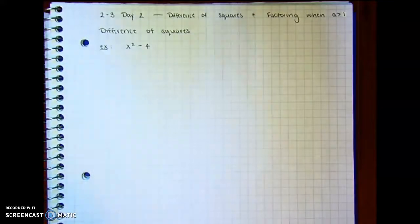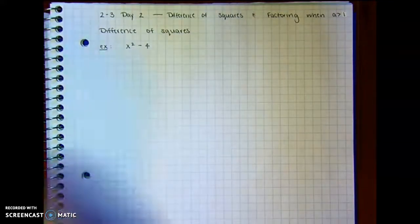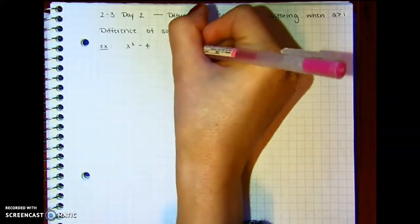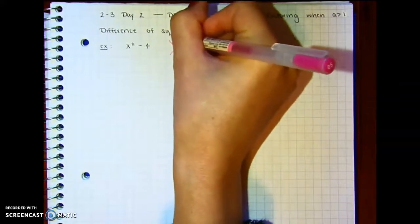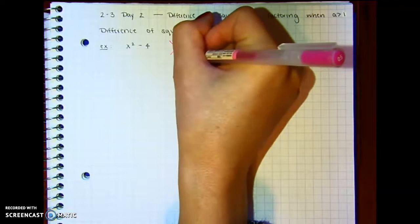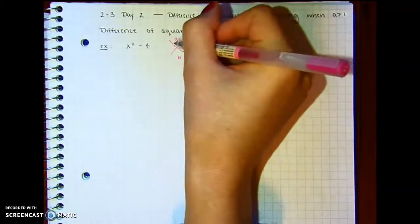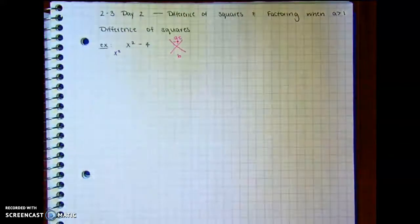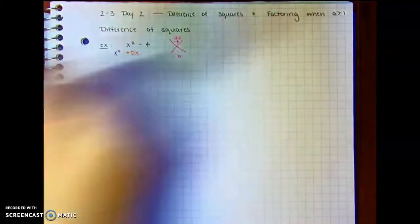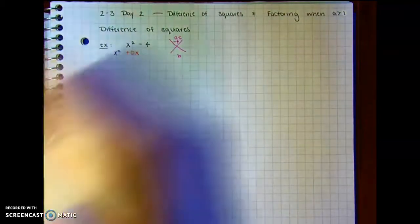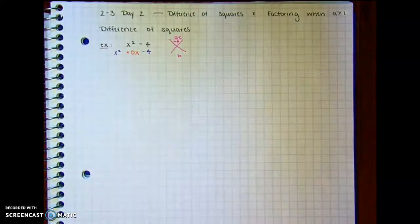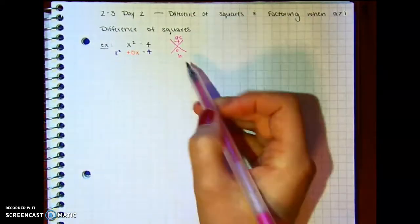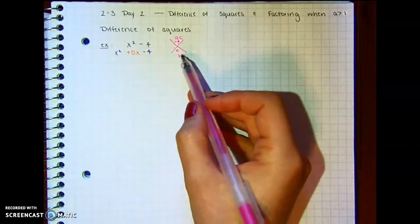So the idea comes from still keeping the idea that one multiplies to a times c and adds to equal b. So a times c is negative 4, but what's our b value? You can think of this as x squared plus 0x, right? So our b value is just 0.